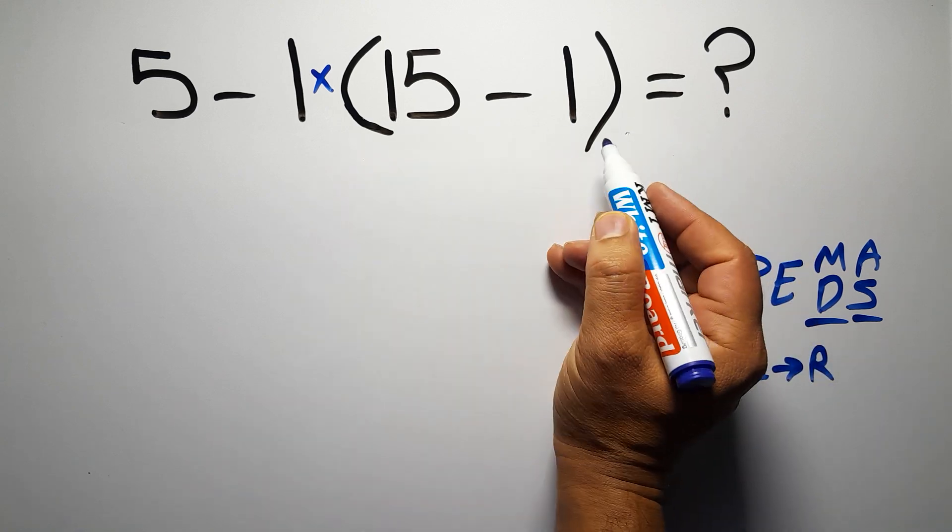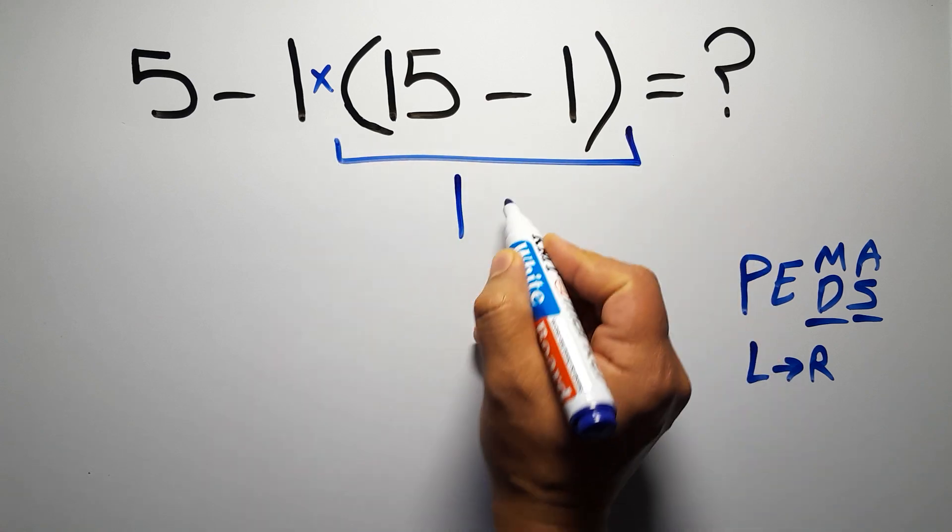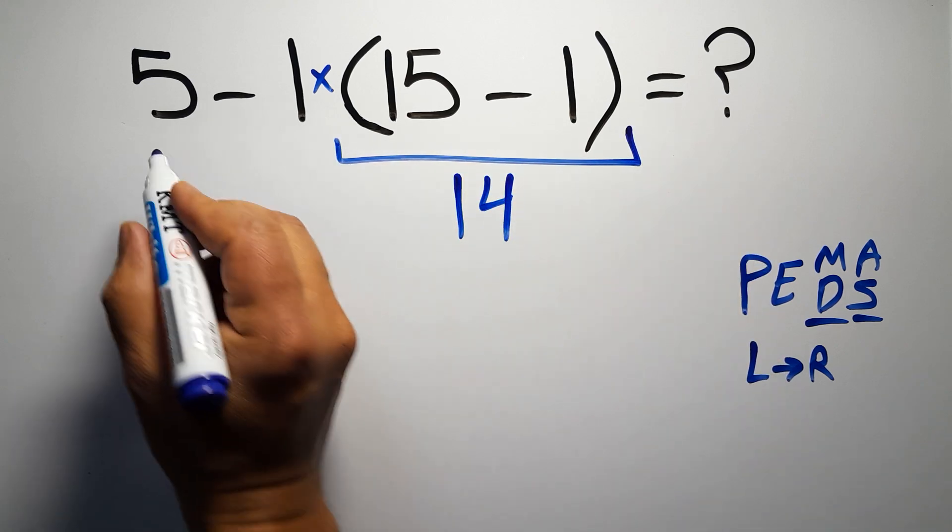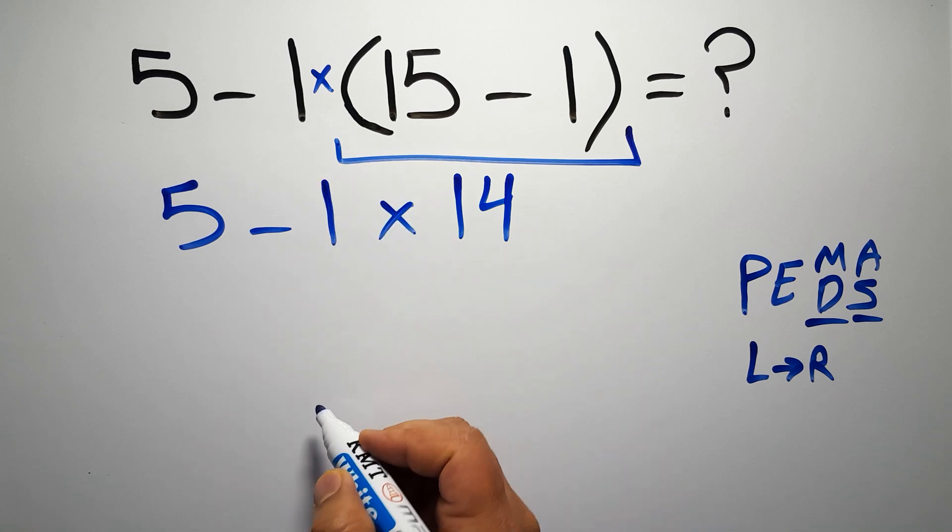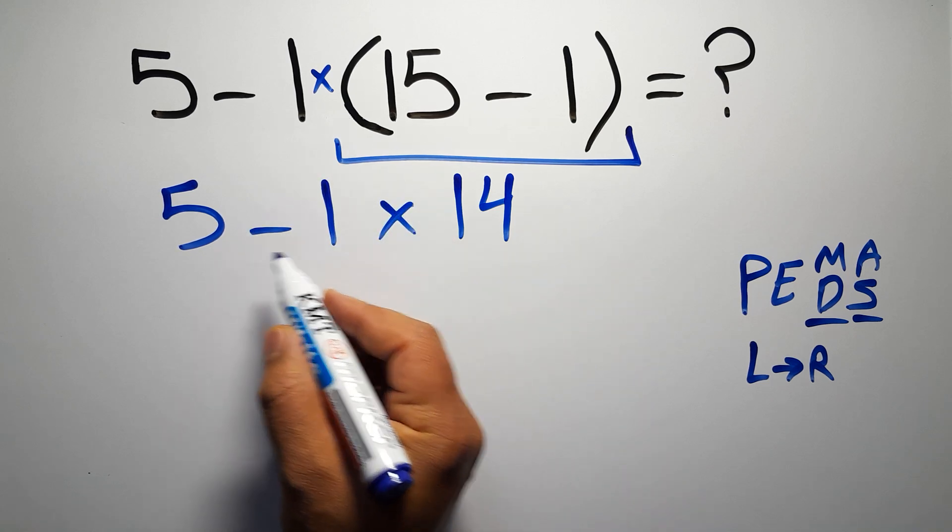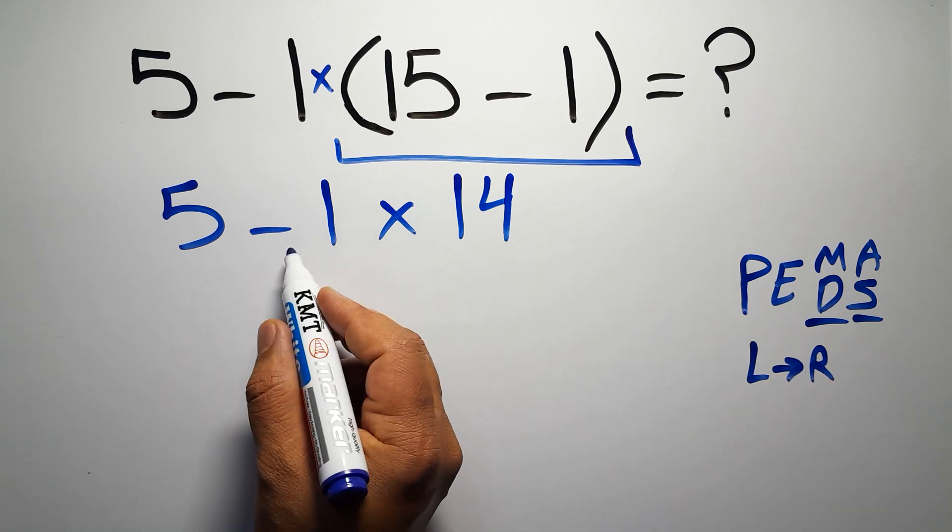So first, this parentheses. Inside this parentheses we have 15 minus 1, which equals 14, so 5 minus 1 times 14. Now we have one subtraction and one multiplication. According to PEMDAS, multiplication has higher priority than subtraction.